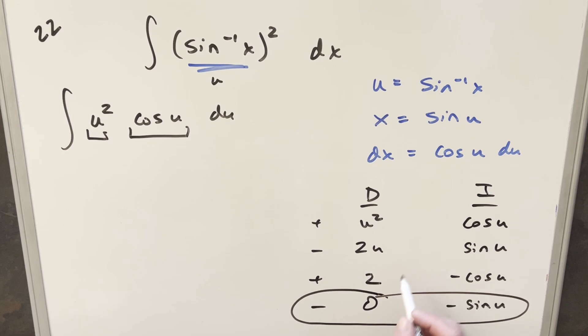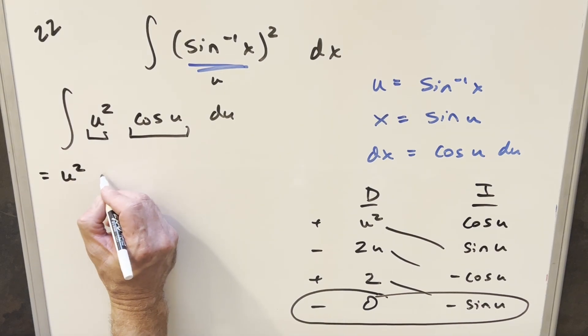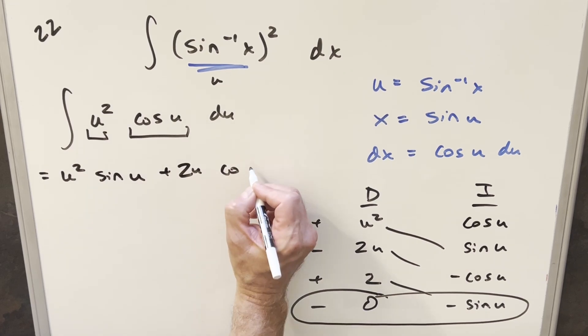I don't need to worry about that. But we're going to take our solution here on the diagonals and see what we have. So I think we'll just go top to bottom. So we're going to have, for the first part, u squared sine u. Second one, minus times minus is plus. So we have 2u cosine u.